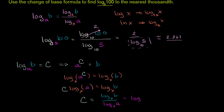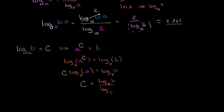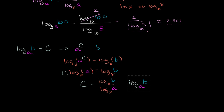Since c was defined as log base a of b, we've shown that log base a of b equals log base x of b divided by log base x of a. We've proven the change of base formula. In this example, a was 5, b was 100, and the base we switched to was 10, so x is 10.